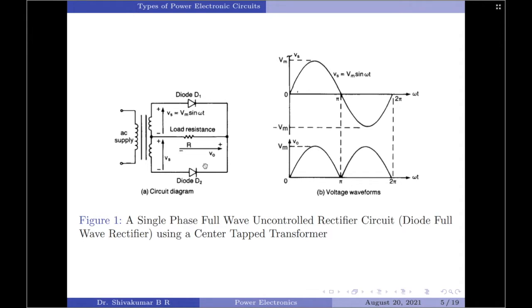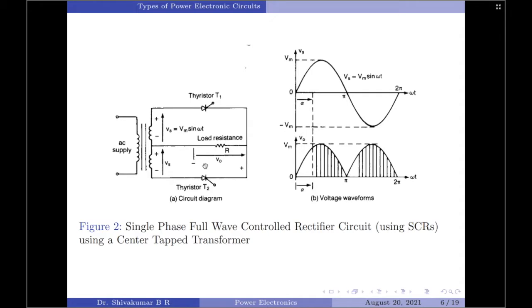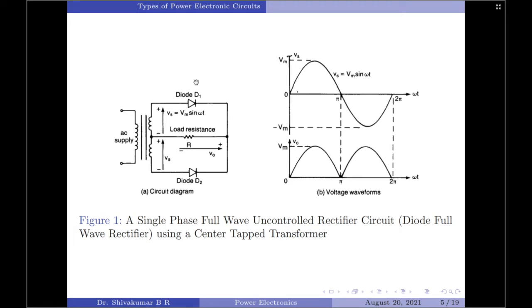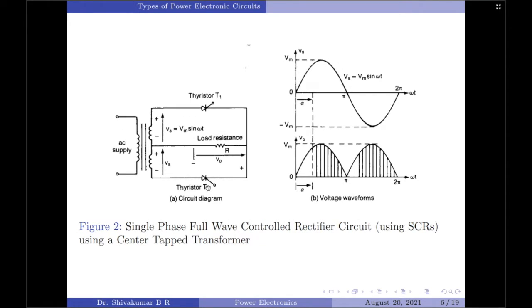Moving on to a controlled rectifier — these rectifiers use controlled switching devices such as an SCR and provide an adjustable DC output voltage by controlling the phase or triggering angle at which the switching devices are turned on. This is essentially the same circuit discussed for the uncontrolled rectifier, except that now we are using thyristors in place of diodes. A thyristor requires a gate voltage to turn on in addition to the anode-to-cathode voltage, and it is at the instant the gate voltage is provided that the thyristor turns on. Because of this, the analyst can now control the overall output voltage across the load resistance. Further, depending upon the type of input supply, the thyristors can be turned off either naturally or by using forced commutation techniques.